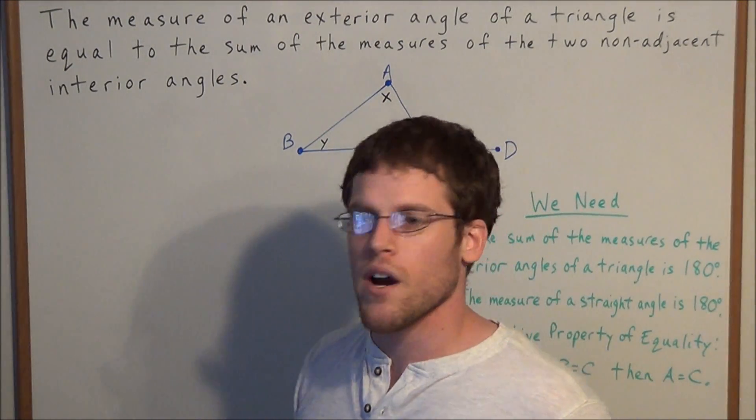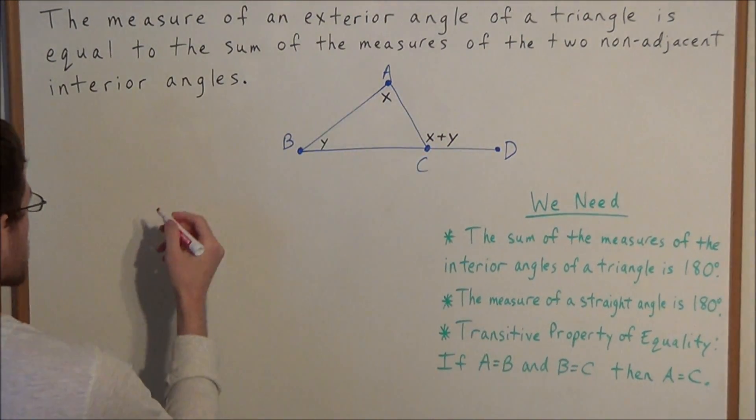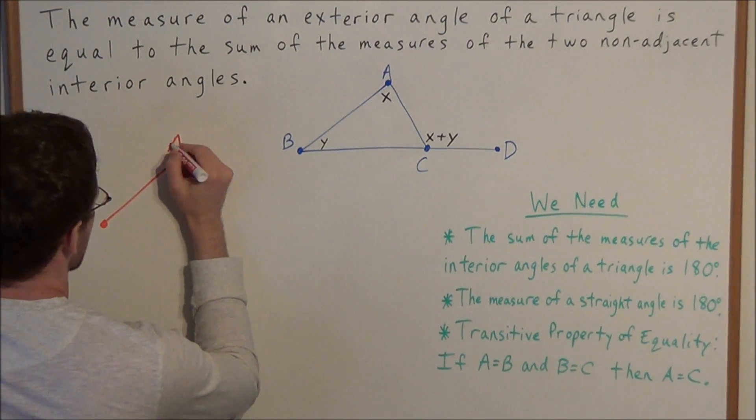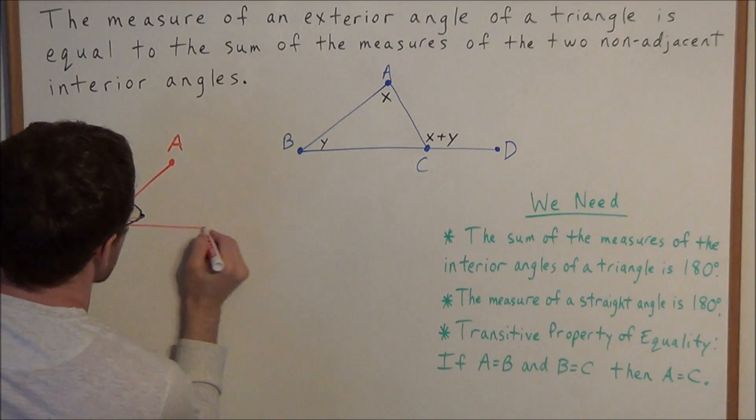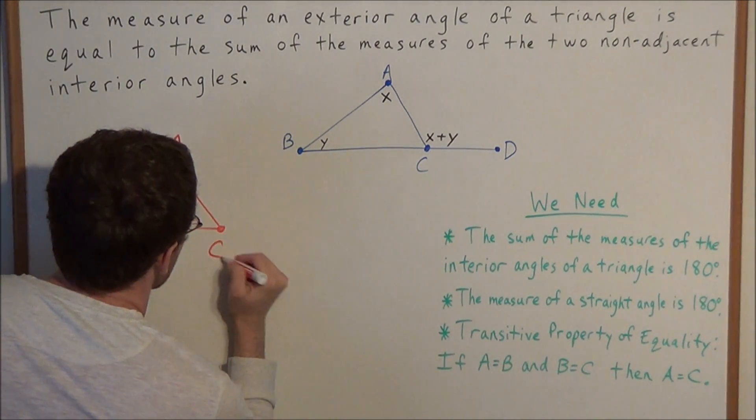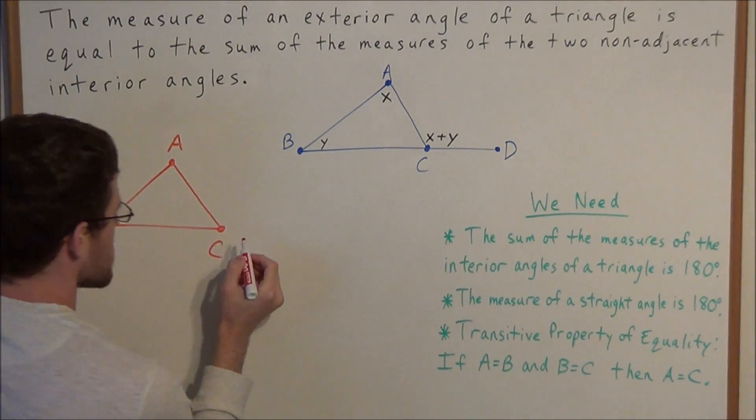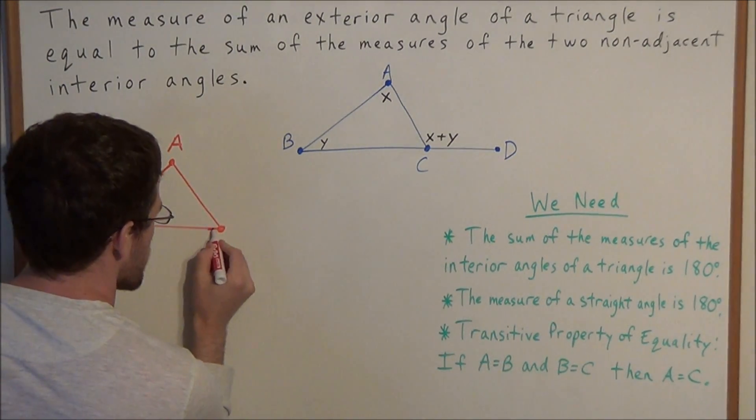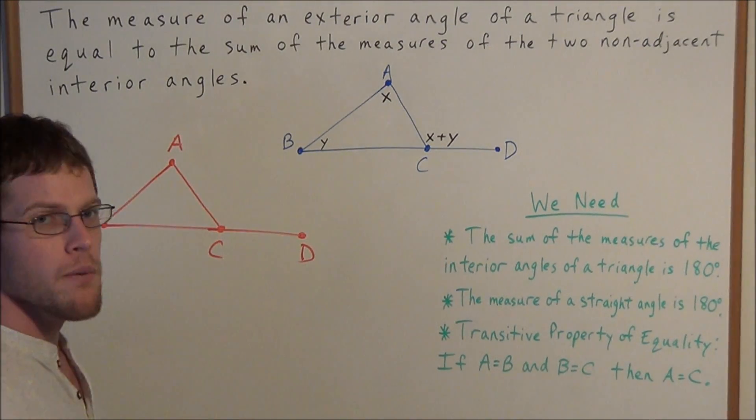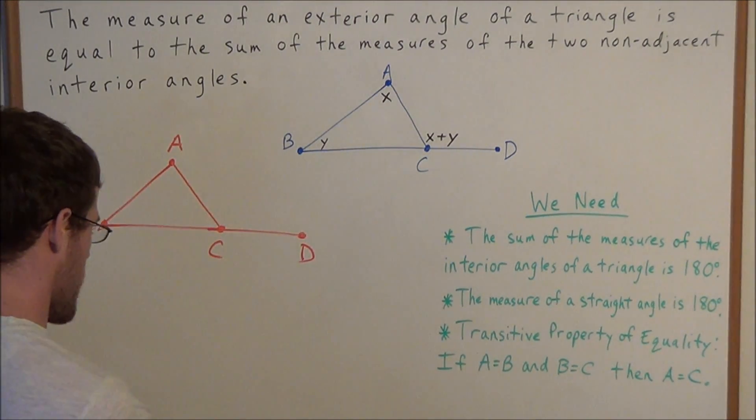Let's take a look at why this is true. If we sketch some general triangle, we'll call this triangle ABC. We want to build a triangle that looks like the triangle in the diagram. So we extend side BC to form line segment BCD.